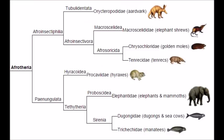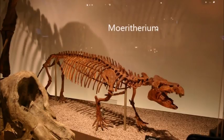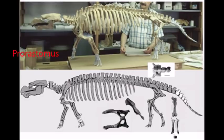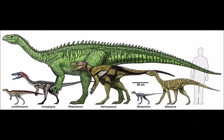For example, if we trace the lineages of elephants and manatees backwards, we come to creatures like Moeritherium and Prorastomus, respectively. In the previous video we saw the same thing with the Triassic relatives of theropods, ornithischians, and sauropodomorphs, who all look very similar to each other. We will continue further on in time with the clade of sauropodomorphs, highlighting some species along the way.